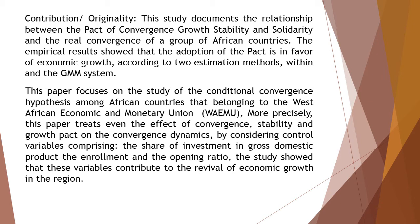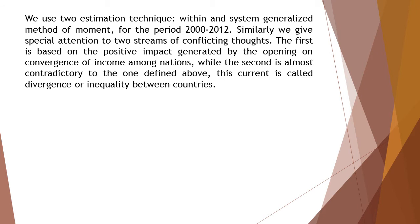We use two estimation techniques — within and system generalized method of moments — for the period 2000 to 2012. Similarly, we give special attention to two streams of conflicting thoughts. The first is based on the positive impact generated by the opening on convergence of income among nations, while the second is almost contradictory to the one defined above; this current is called divergence or inequality between countries.